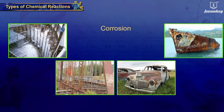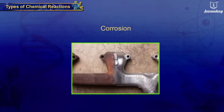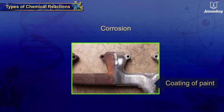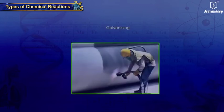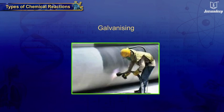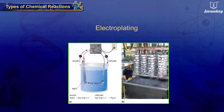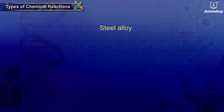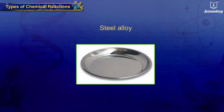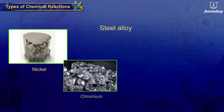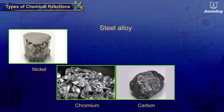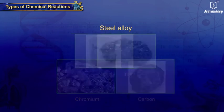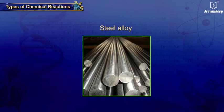Corrosion causes damage to buildings, bridges, automobiles, ships, and other articles mainly made of iron. Corrosion can be prevented by coating the exposed surface by applying paint or anti-rust solution, or by the process of galvanizing or electroplating with other metals.